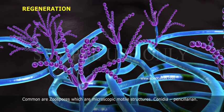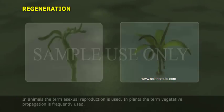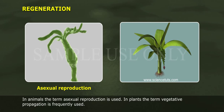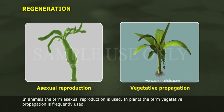Conidia in Penicillium: In animals, the term asexual reproduction is used. In plants, the term vegetative propagation is frequently used.